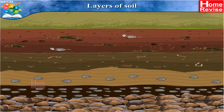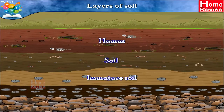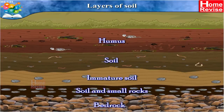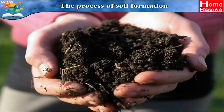Students, we can see five layers of soil: humus, soil, immature soil, layer of soil and small rocks, and bedrock. The process of soil formation follows from these layers.